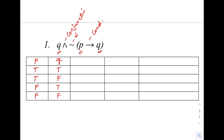Remember from earlier, in a conditional proposition, the truth value will only be false when the combination is true-then-false. The outcome in that case is false; the rest are true. Let's try: we have true, true — so the conditional proposition is true. Next, true, false — so this is false. Then false, true — so the conditional proposition is true. Finally, false, false — so this is also true.